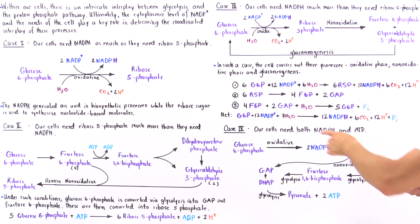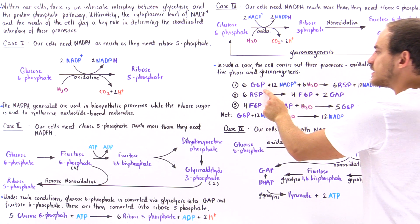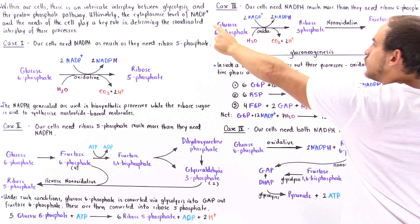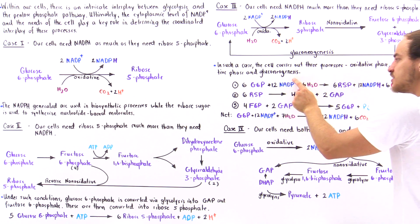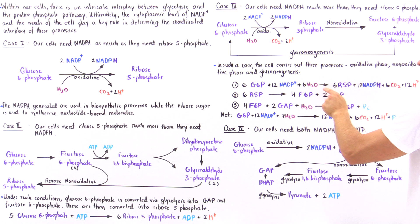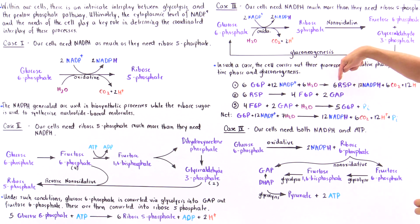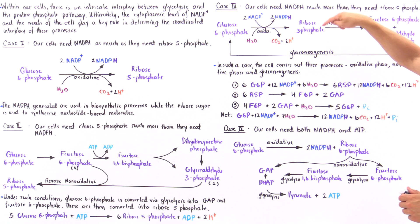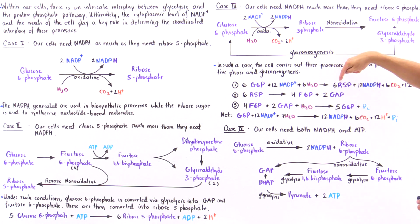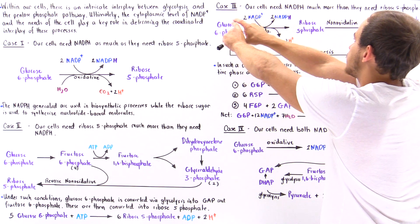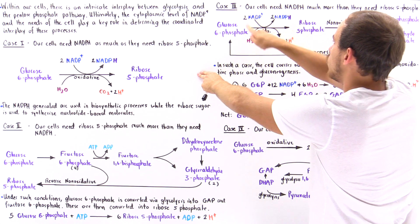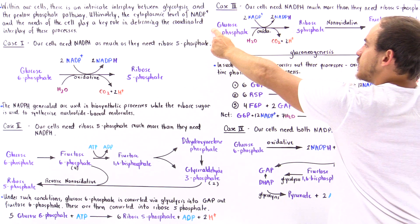In step one: 6 glucose-6-phosphate molecules, 12 NADP+ molecules, and 6 water molecules produce 6 ribose-5-phosphate, 12 NADPH molecules, 6 carbon dioxide molecules, and 12 H+ ions — this is the oxidative phase multiplied by 6. In step two: 6 ribose-5-phosphates generate 4 fructose-6-phosphates and 2 glyceraldehyde-3-phosphates via the non-oxidative phase.